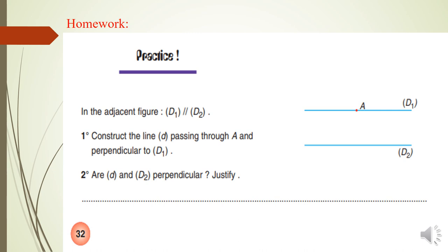Now, you have as a homework to solve the practice, page 32. In the adjacent figure, (D1) parallel to (D2), here we have two parallel lines. Construct the line (D) passing through A and perpendicular to (D1). We have to draw (D) passing through the point A and perpendicular to (D1).